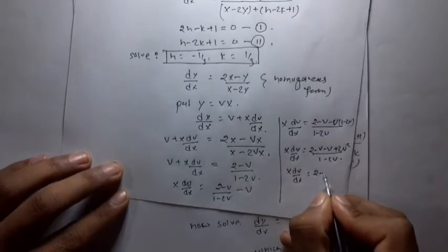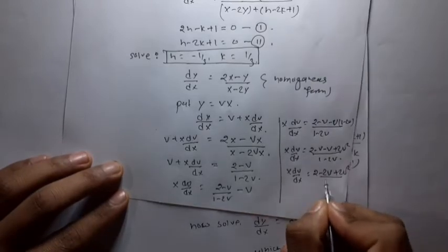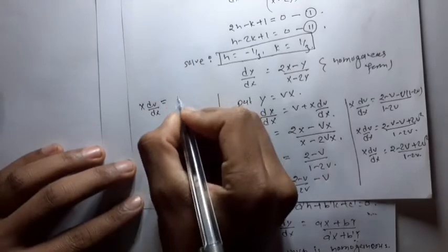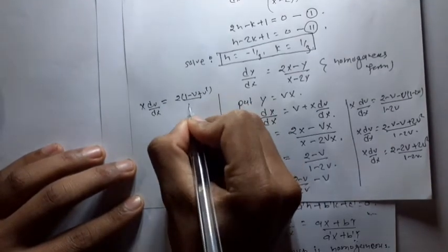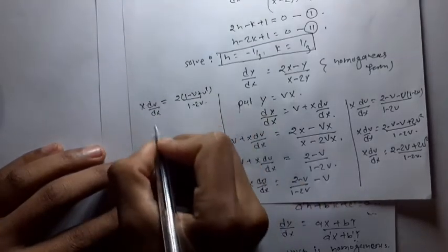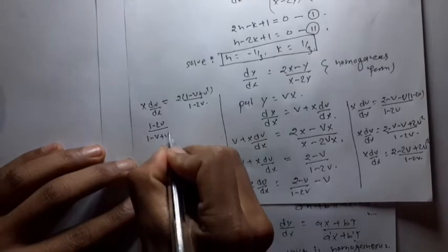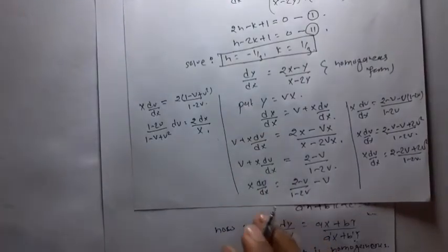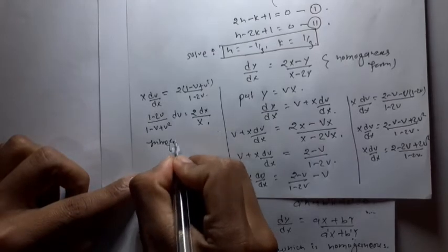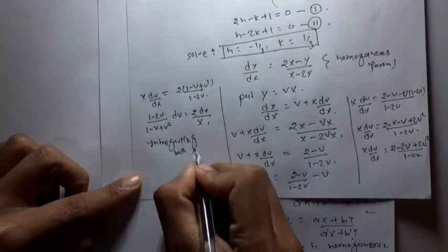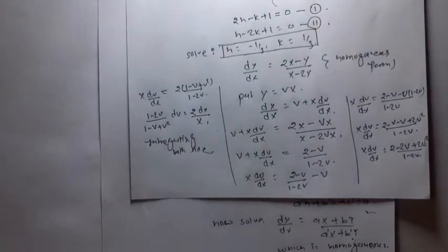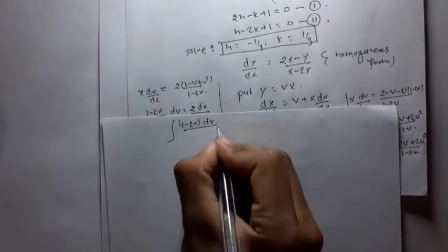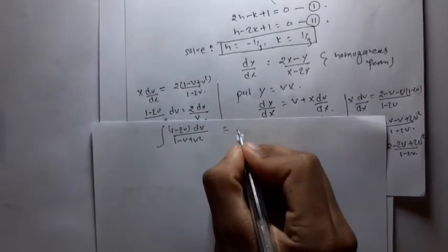X·dv/dX = 2(1 - v + v²)/(1 - 2v). Separating variables: (1 - 2v)/(1 - v + v²) dv = 2·dX/X. Integrating both sides: integral of (1 - 2v)/(1 - v + v²) dv = 2·integral of dX/X. We note that the derivative of (1 - v + v²) is (-1 + 2v), so the numerator (1 - 2v) is -1 times the derivative.